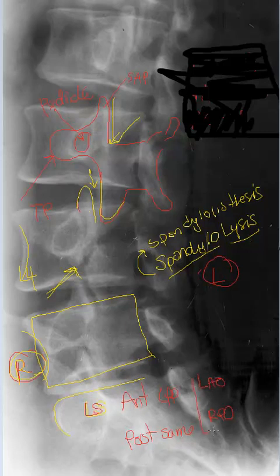That is as far as we can deduce from this particular radiograph. We can't tell if it was taken as an anterior or posterior oblique, but we know from the visualization of a right-sided Scotty dog that those two projections are the only possibilities. I hope this tutorial was helpful for you — please join us again for future tutorials. Thank you.